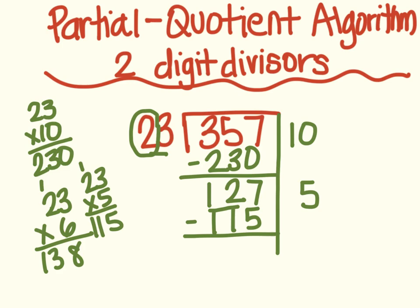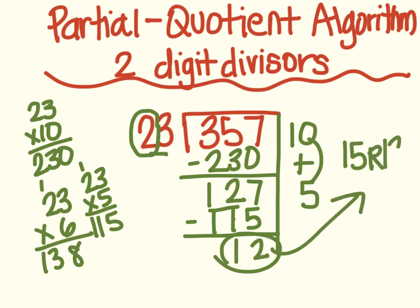And when I do that subtraction, 5 from 7 is 2, 1 from 2 is 1, which leaves me with 12. 12 is smaller than 23, so I know that is absolutely correct with my remainder. So I'm going to take these two numbers to the side, add them, I get 15, remainder 12.